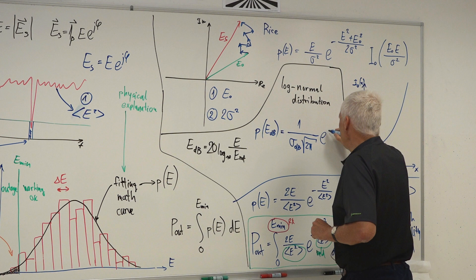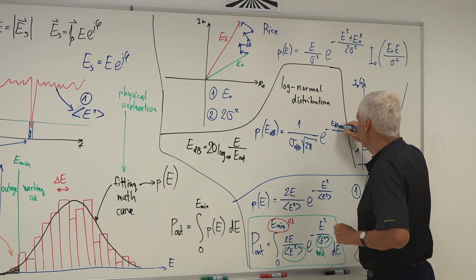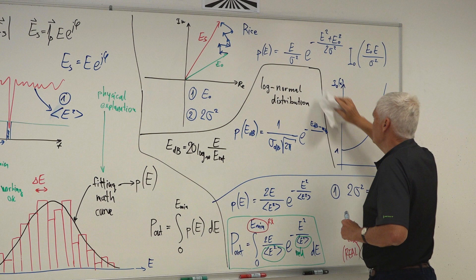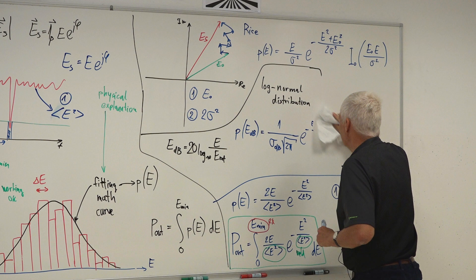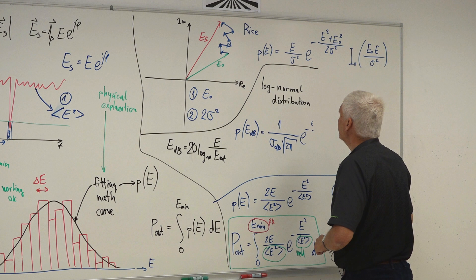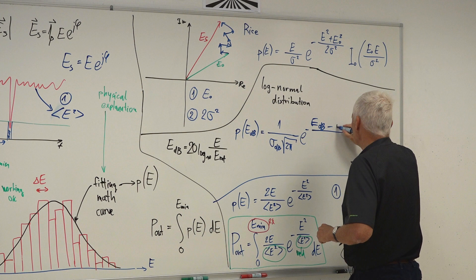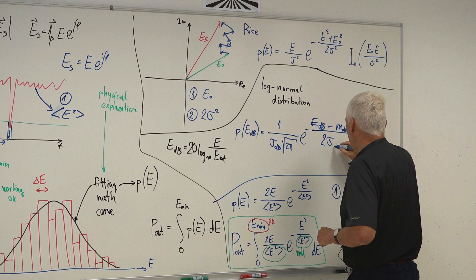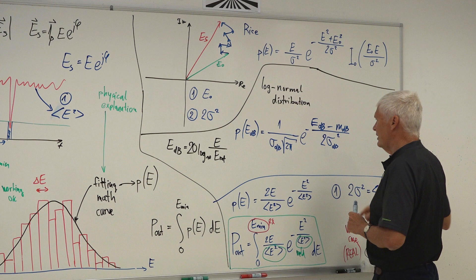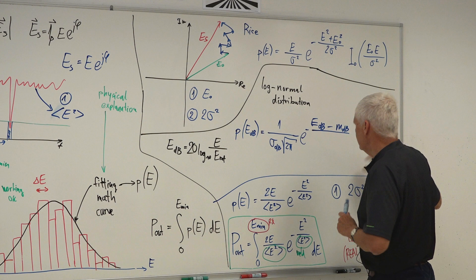The log-normal distribution is just like a normal (Gaussian) distribution: 1 over σ_dB times √(2π), times e to the minus [(E_dB − mean E_dB)² / (2σ_dB²)]. This is the exponent function. I need to write it a little smaller to fit — so: 2σ_dB squared in the denominator.